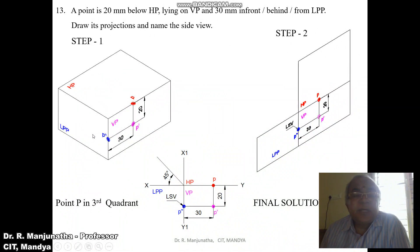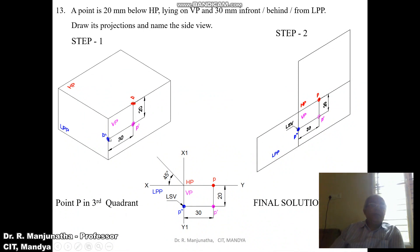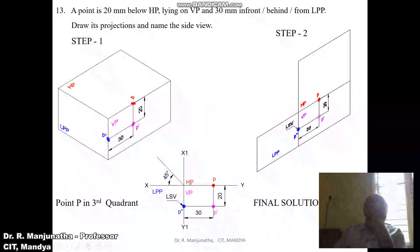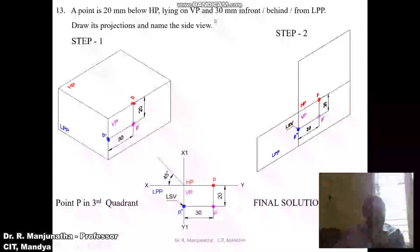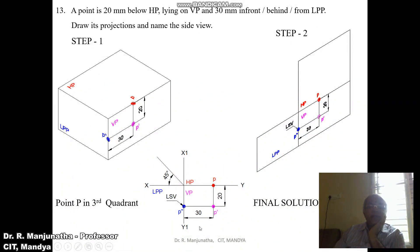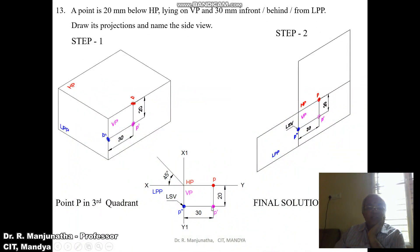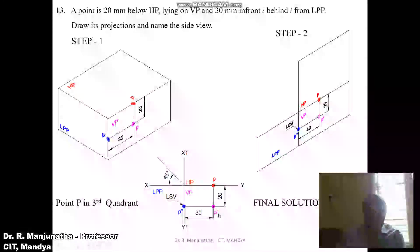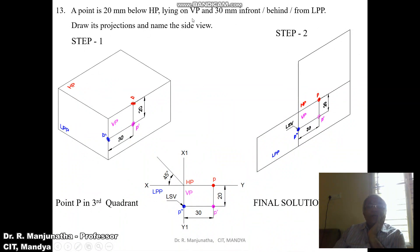When you look from the left side view, you can see the distance below HP and also that the point is on VP, so you get this point. We can see the distances of both the front view and the top view. Now solving in the sketchbook: first draw the XY line and X1Y1 line, then mark HP above the XY line, VP below the XY line, and LPP to the left of the vertical plane. The distance with respect to the profile plane — 30mm behind LPP — is seen in VP and also on HP. From here measure 30mm and draw a vertical projector. 20mm below HP can be seen in VP, which is below the XY line, so measure 20mm from the XY line and mark this point as p-dash.